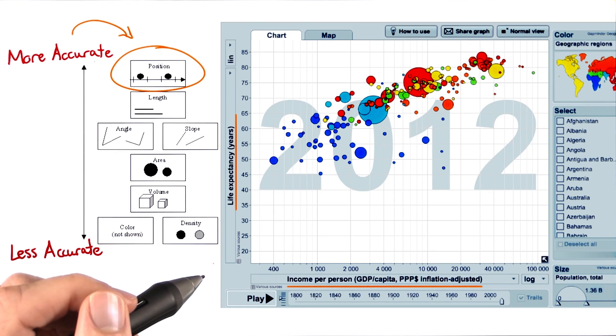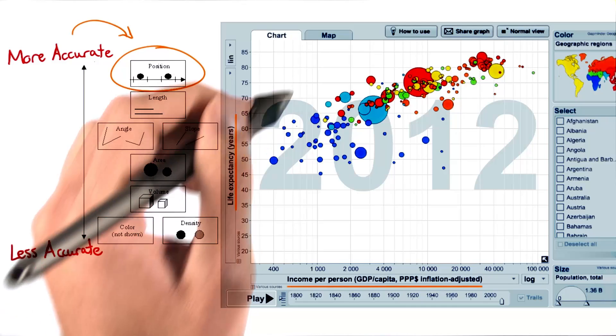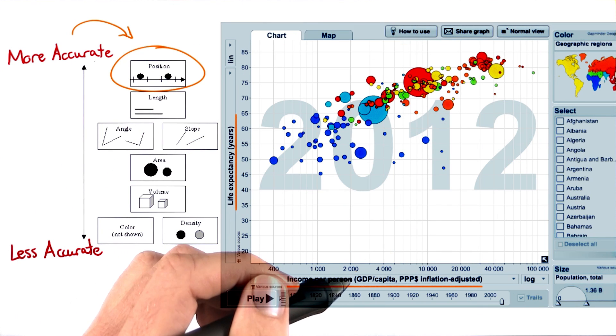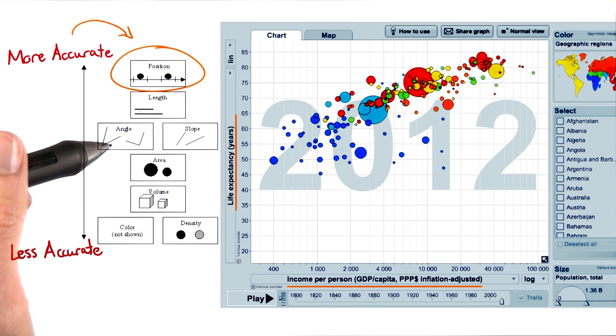The key takeaway here is that if you want to design effective visualizations, then you need to understand the rankings of visual encodings and choose appropriate encodings in your designs.